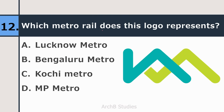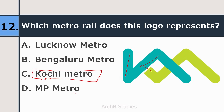Twelfth question: which metro rail does this logo represent — Lucknow Metro, Bengaluru Metro, Kochi Metro, or MP Metro? The right answer is Kochi Metro. Kochi is in Kerala, also known as Cochin, and as you can see the logo shows K and M for Kochi Metro.